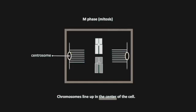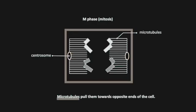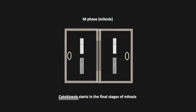Chromosomes line up in the center of the cell. Chromosomes are pulled towards opposite ends of the cell. Let's cut in half. That's all.